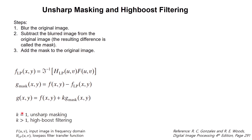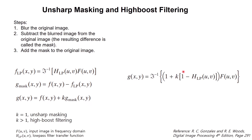Here we have variable k. When we set k equal to 1 we have unsharp masking, and when k is larger than 1 this process is referred to as high-boost filtering. In the textbooks they rearrange the equation into a second form. We will learn how to do image sharpening using these two equations in Python.